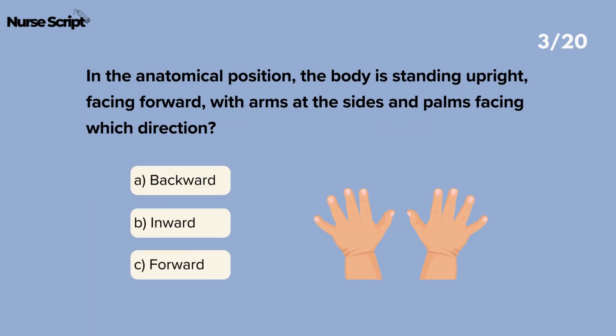In the anatomical position, the body is standing upright, facing forward, with arms at the sides and palms facing which direction? Forward.